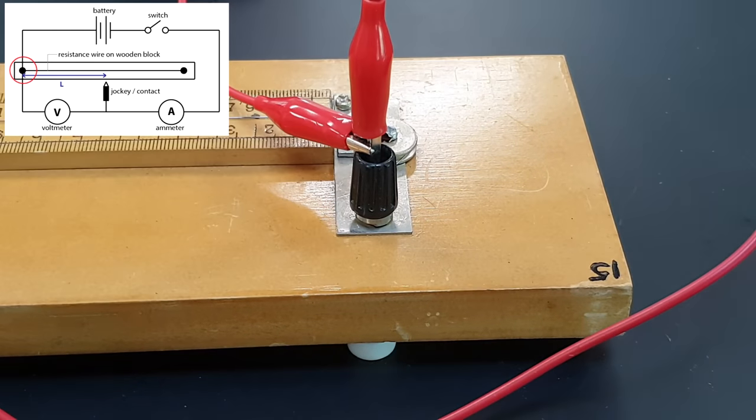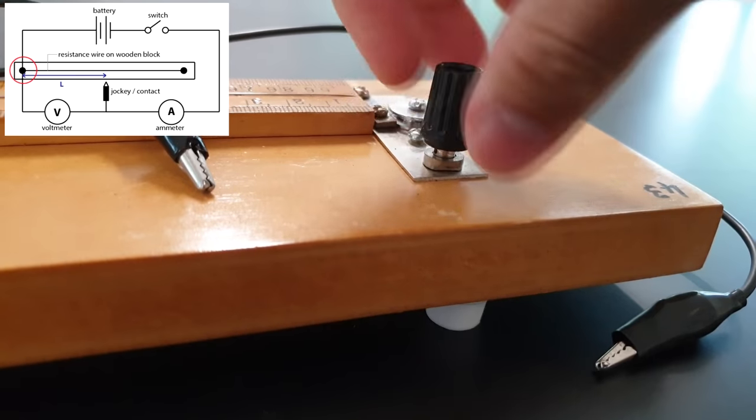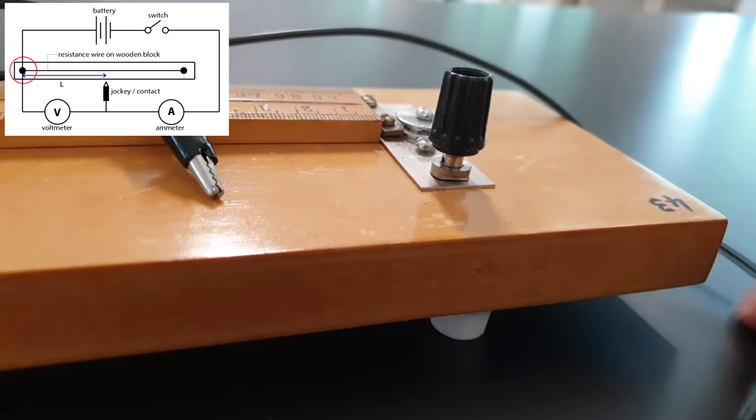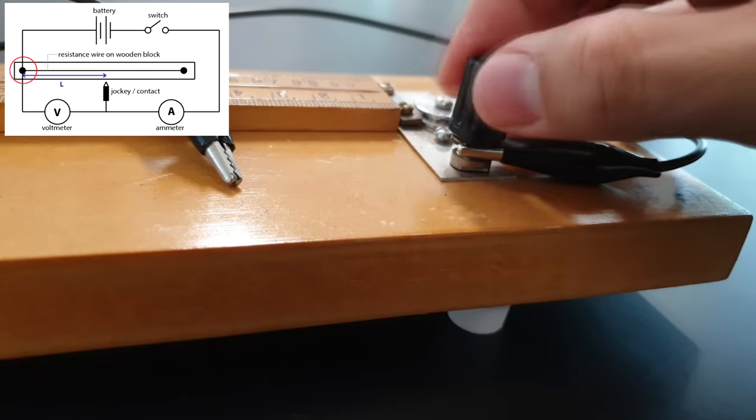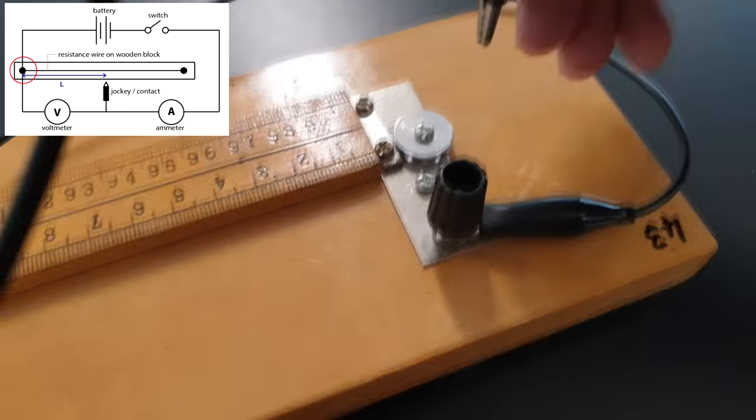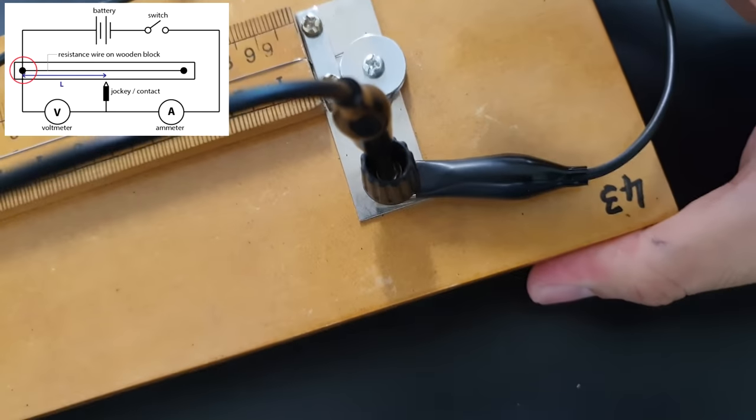You can loosen the plastic knob a little bit, take the crocodile clip and clip it to the bottom. Make sure it's in contact with the metal part. Clip the other crocodile clip to the top. Do not just clip onto the plastic—make sure it comes into contact with the metal so that current can flow.